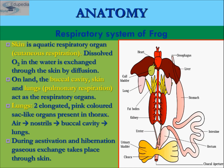Now, lungs. The frog has two lungs — one pair. There are two elongated, pink-colored, sac-like organs present in the thorax. Air goes in through the nostrils, into the buccal cavity, and then into the lungs.